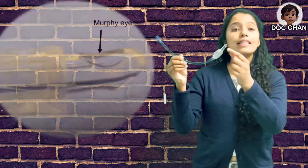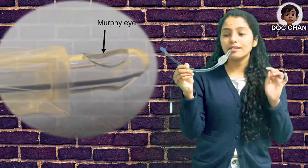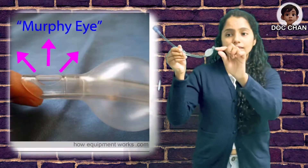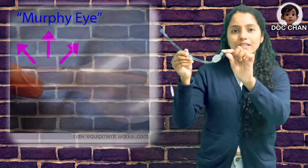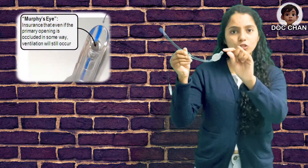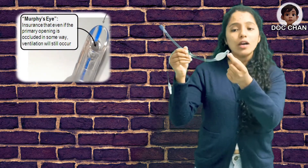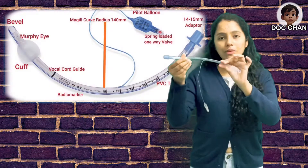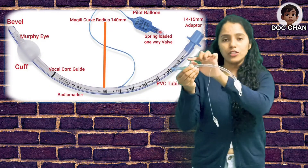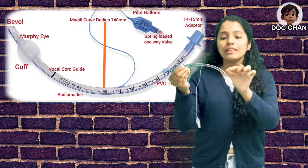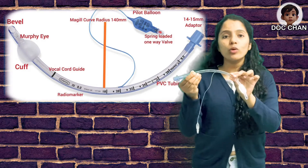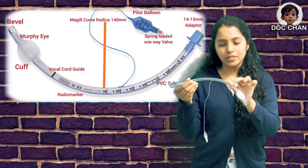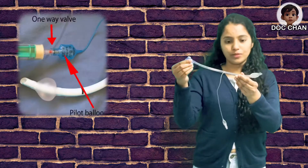The next part is Murphy's eye. This is the most important part in this tube. Just imagine there is some block or some secretion which is blocking the opening of the tube — Murphy's eye will come to rescue. After the cuff, we have different markings on the tube and a curvature. This curvature is around 140 ±2 mm. Then we have a pilot balloon and a connector.